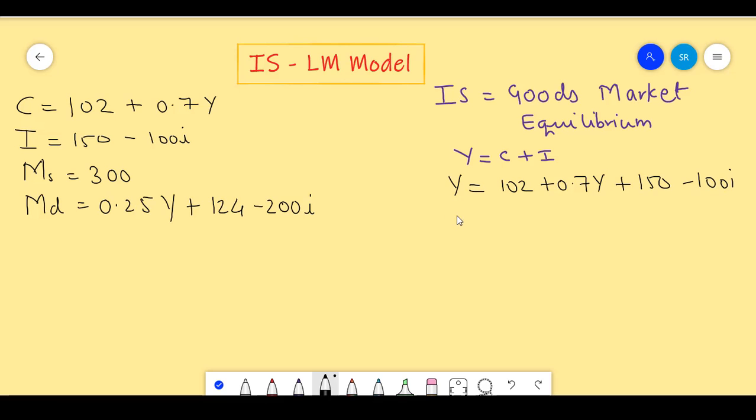Solving further, we can take the 0.7Y on the left hand side and this equals 252 minus 100I. Therefore, we can write this as 0.3Y equals 252 minus 100I. Notice that it's 1Y minus 0.7Y which gives us the answer 0.3Y. This equals 0.3Y plus 100I minus 252 equals 0.